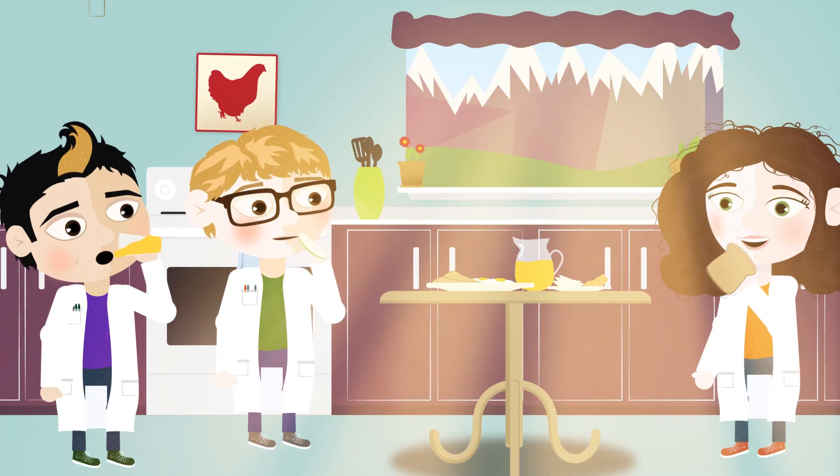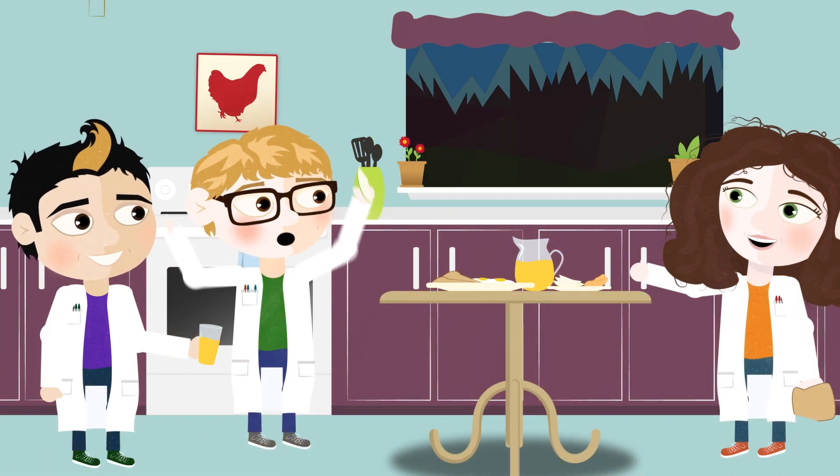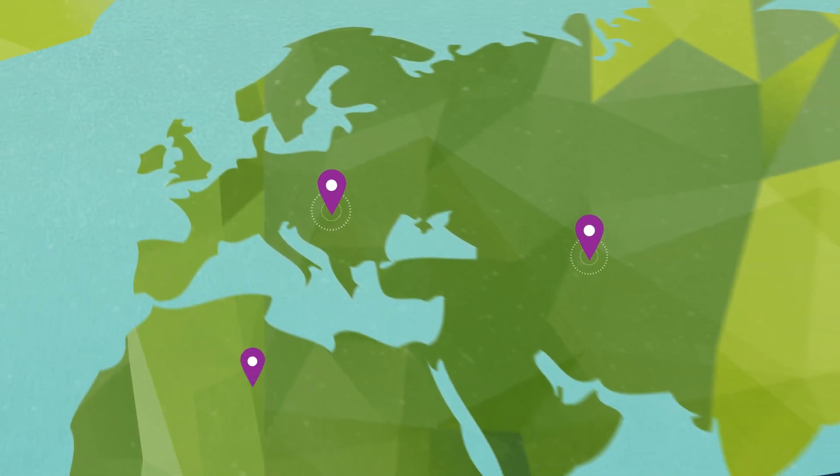Those folks will get to see the total eclipse right around breakfast time. They'll have a few minutes of darkness, almost as dark as night. People in the rest of Europe, and also parts of Asia and Africa, will see a partial solar eclipse. For them, it'll look like a little bite has been taken out of the sun. And as the minutes pass, that bite will get smaller and smaller, until the sun is back to its old self again.